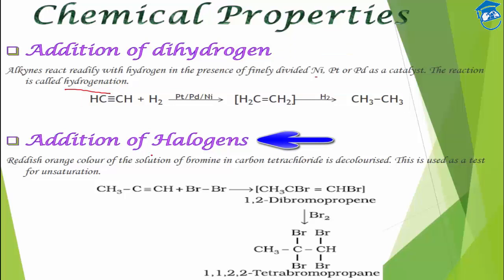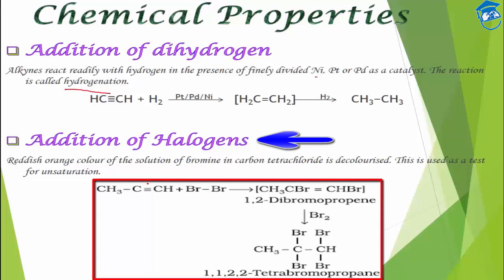Next is addition of halogens. Alkynes readily react with halogens, which is why this reaction is used as a test for unsaturation. The reddish-orange color of bromine solution gets decolorized on reaction. One mole of halogen is added first to give a dihalide, and further addition of bromine gives a tetrabromoalkane.